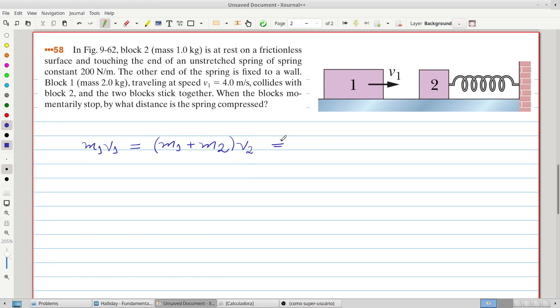So we can find the velocity of both blocks after the collision. It will be M1 divided by the sum, M1 plus M2 multiplied by V1.